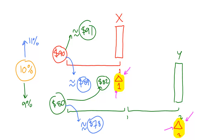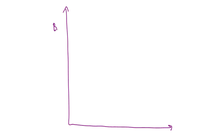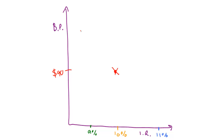The graph we can create looks something like this, and you'll see this in many finance textbooks. Along the side we get the bond price, and along the bottom we get interest rates. We've got the 10% rate, the 11% rate, and the 9% rate. At 10%, this particular bond was priced at $90. What duration will tell you, if you multiply things in a particular way, is it gives you a slope — and we'll do this on the spreadsheet very soon.